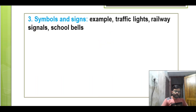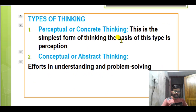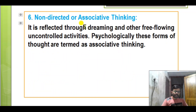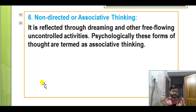So we are talking about the types of thinking: perceptual or concrete thinking, conceptual or abstract thinking, reflective thinking, creative thinking, critical thinking, and non-directed or associative thinking. Non-directed thinking involves daydreaming and other free-flowing, uncontrolled activities. Make notes on these points.